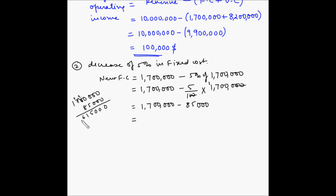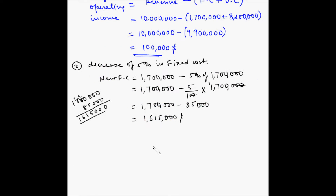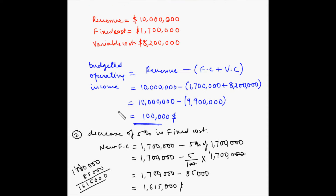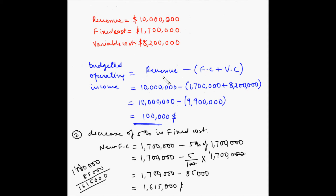This equals 1.615 million dollars. So with this change in fixed cost from 1.7 million dollars to 1.615 million dollars, we need to find the impact on the budgeted operating income. Budgeted operating income in case 2 equals revenue minus fixed cost plus variable cost. Revenue remains the same at 10 million dollars.